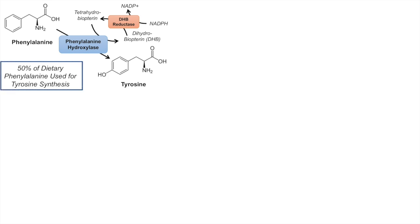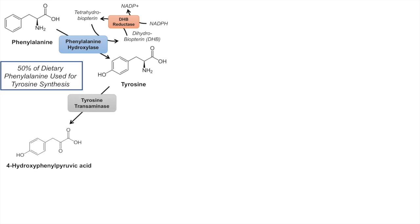A quick note: 50% of dietary phenylalanine is used for tyrosine synthesis. Tyrosine can come from phenylalanine or from the diet directly. Tyrosine can also be shunted into a different pathway — it can undergo a transamination reaction via the enzyme tyrosine transaminase to form 4-hydroxyphenylpyruvic acid, where the amine group from tyrosine is removed and replaced with a ketone. This 4-hydroxyphenylpyruvic acid can be used to form fumarate and acetoacetate for glycogenic or ketogenic reactions.